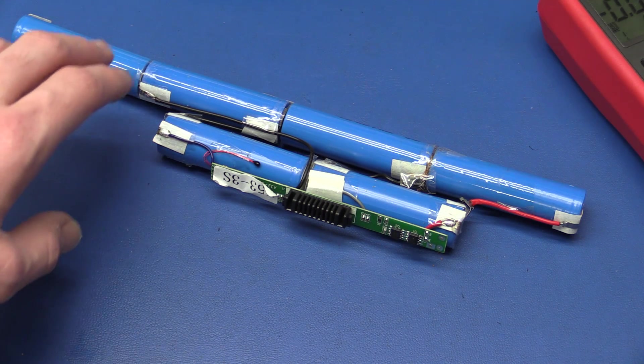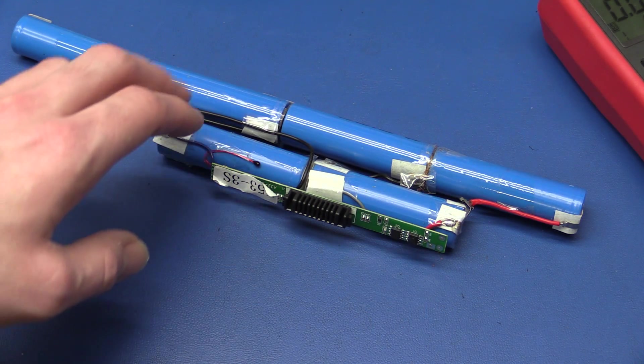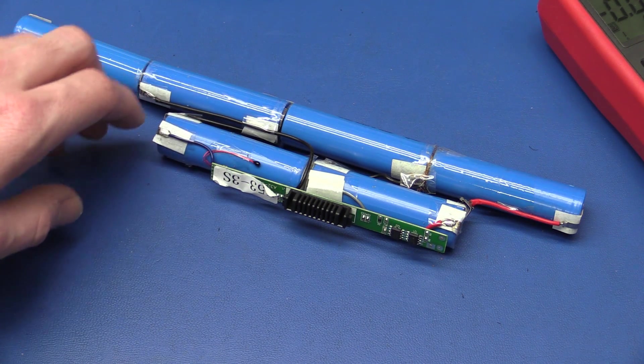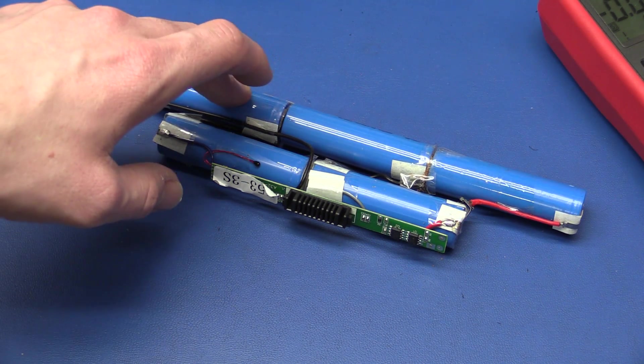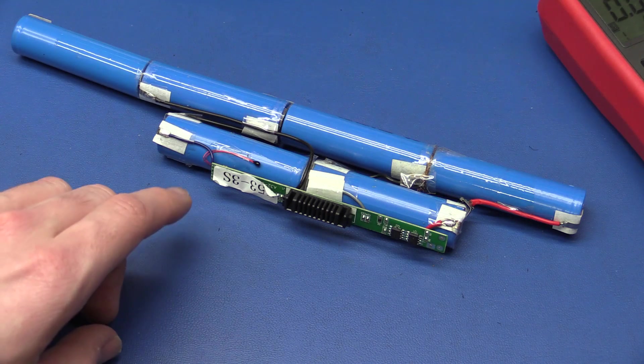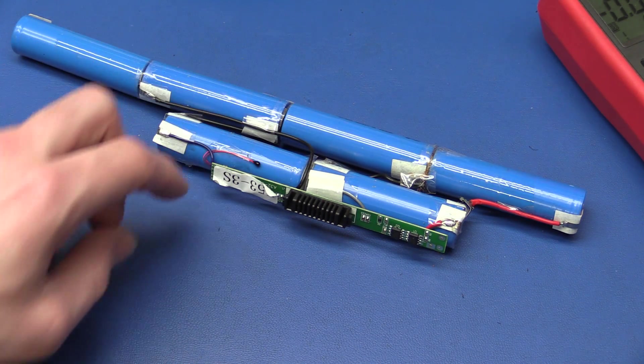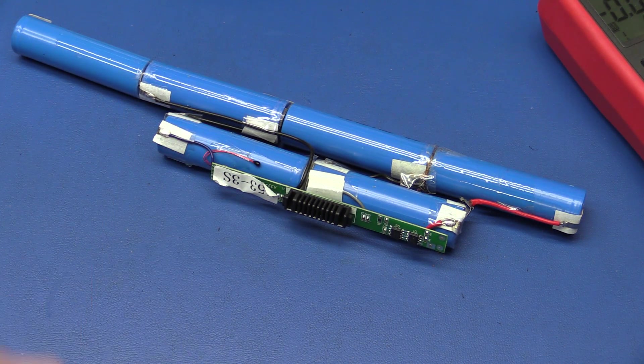So I think I'll just desolder all the cells so we can measure them individually, because it could be that one of them is just open circuit and the voltage we measure is actually the voltage of the other battery in parallel.